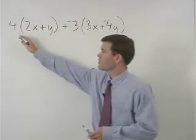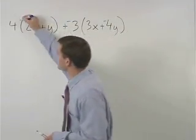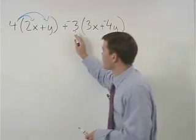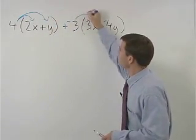Now we can distribute the 4 through the first set of parentheses and the negative 3 through the second set of parentheses.